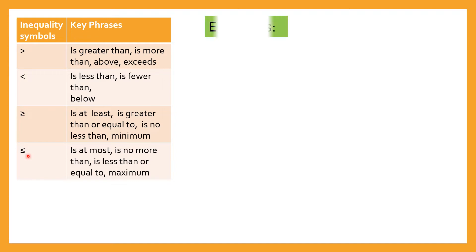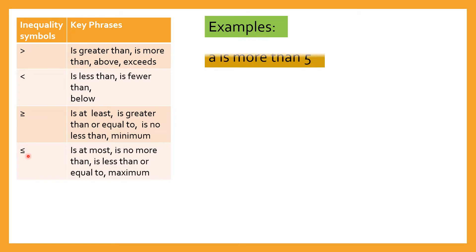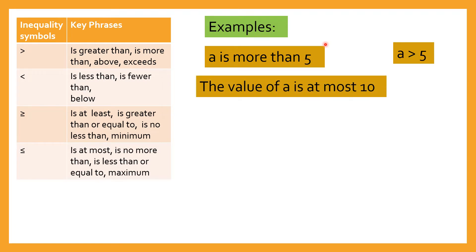So let's have some examples of translation. 'A is more than 5' — so a is greater than 5. 'The value of a is at most 10' — at most means less than or equal, so that is a is less than or equal to 10.